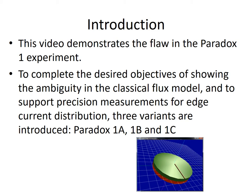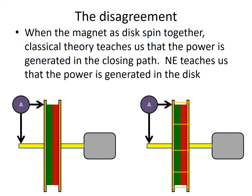In order to complete the desired objectives — which include showing the ambiguity in the classic flux model and supporting the precision measurements for the edge current distribution that we talked about on the Patreon side — we need three variants of the paradox generator: One A, One B, and One C. This is a screen capture from the modeling software for the Biot–Savart hand side.